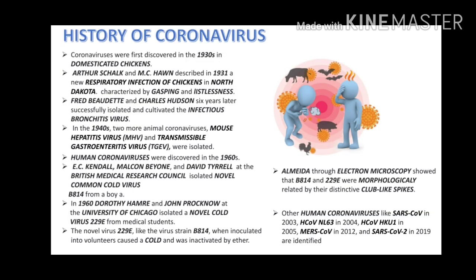History of coronavirus: Coronaviruses were first discovered in the 1930s in domesticated chickens. Arthur Slack and McHorn described in 1931 a new respiratory infection of chickens in North Dakota, characterized by gasping and listlessness. Fred Beaudet and Charles Hudson, six years later, successfully isolated and cultivated the infectious bronchitis virus. In the 1940s, two more animal coronaviruses — mouse hepatitis virus MHV and transmissible gastroenteritis virus TGEV — were isolated.